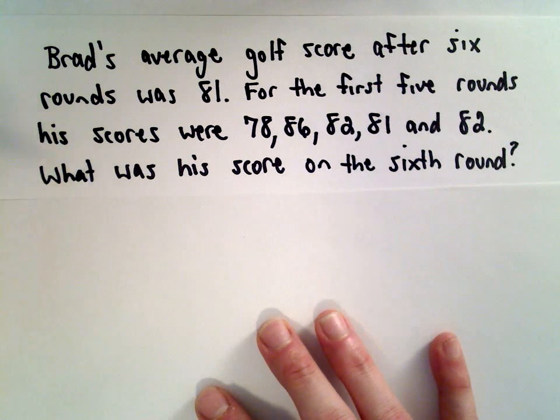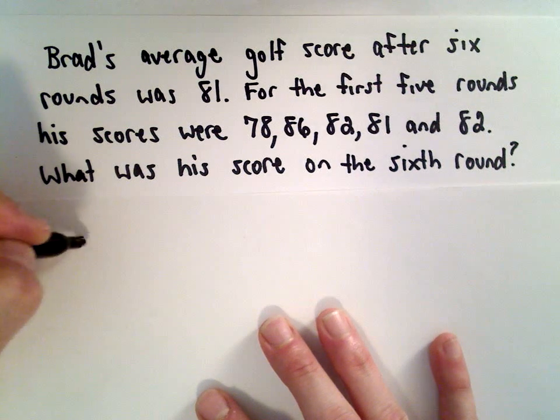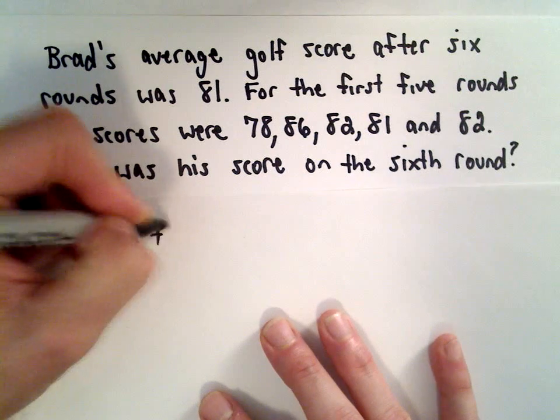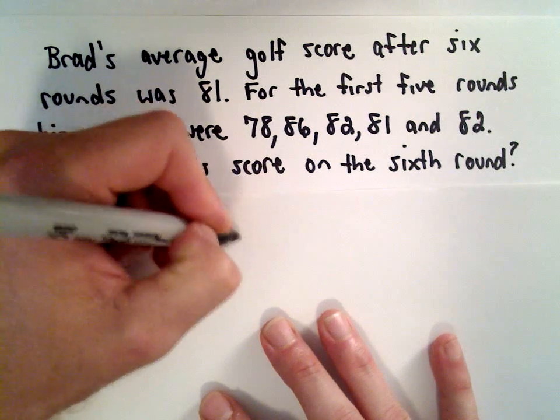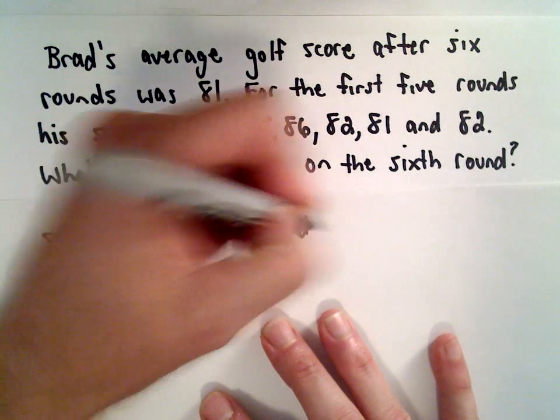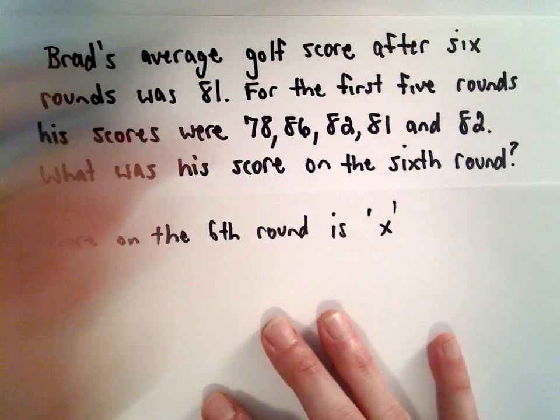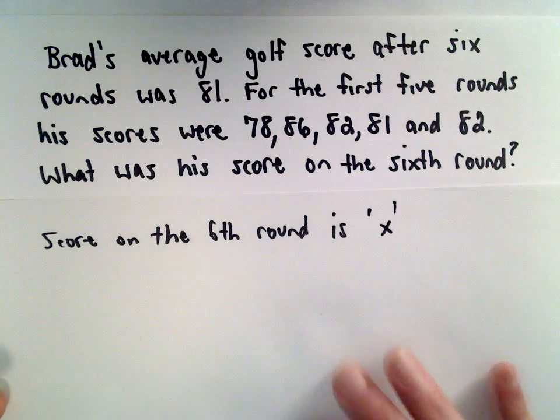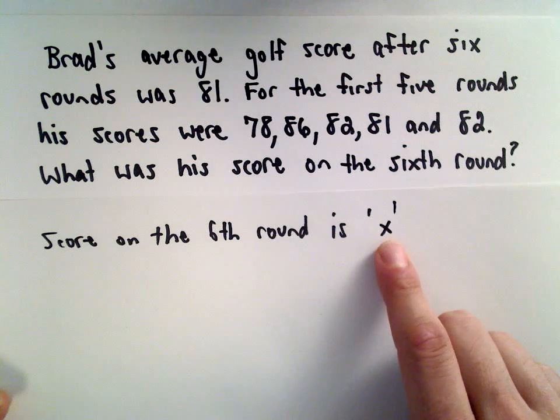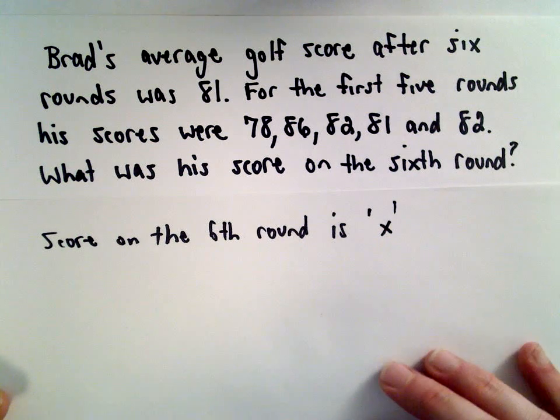Let's label his score on the sixth round as X. We'll call his score on the sixth round X. That's what we're trying to solve for, we want to figure that out.